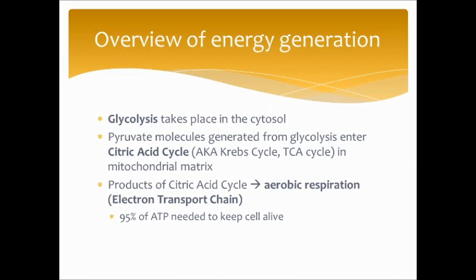Since mitochondria do a lot of energy generation, let's talk about those processes briefly. Glycolysis takes place in the cytosol of the cell — it's the first step in energy generation, taking glucose from food and beginning the process to turn it into ATP. Glucose generates molecules known as pyruvate, and those pyruvate molecules enter the citric acid cycle, also known as the Krebs cycle or TCA cycle, which happens in the mitochondrial matrix.